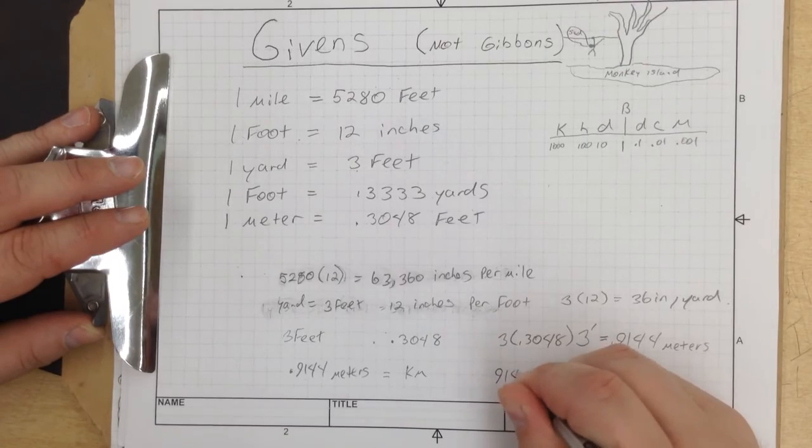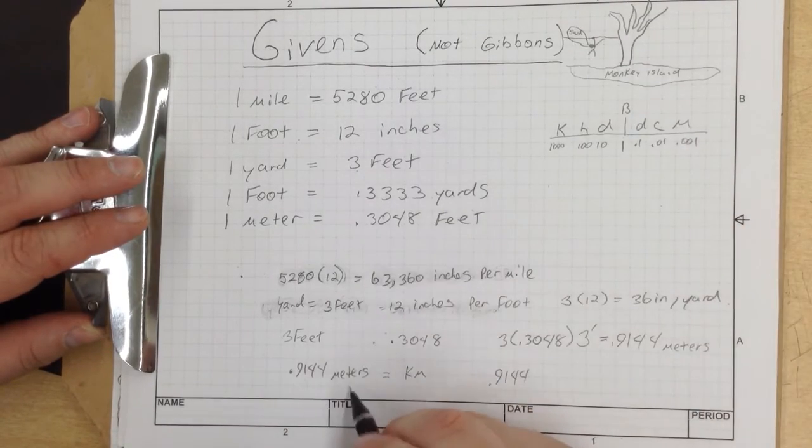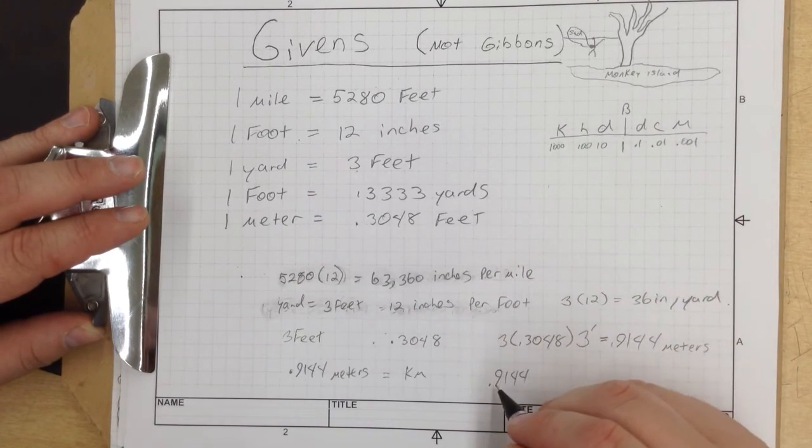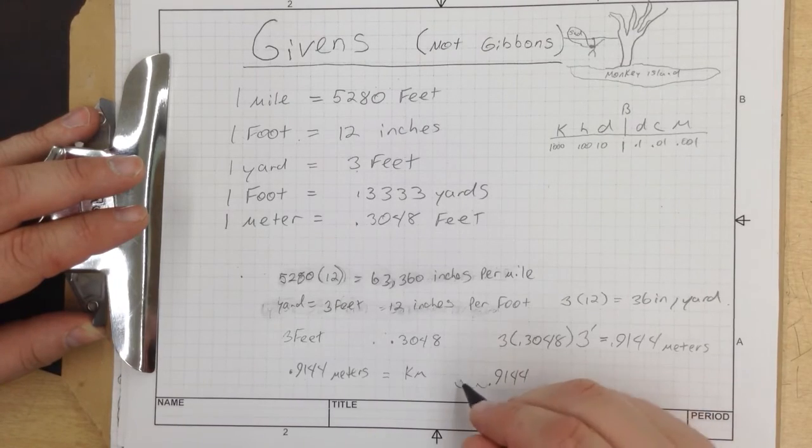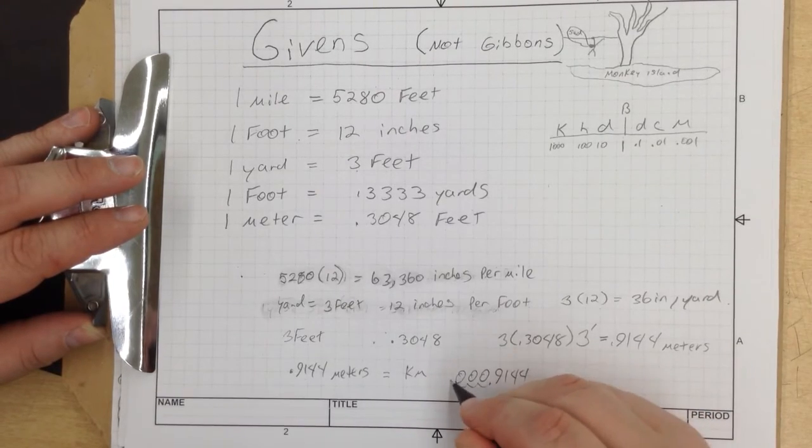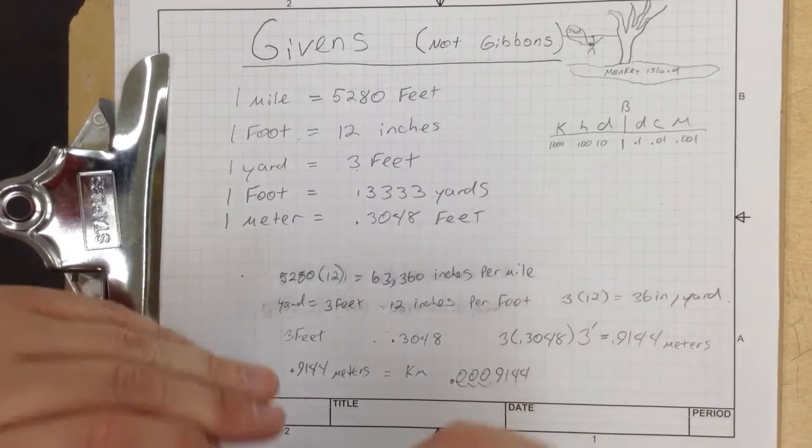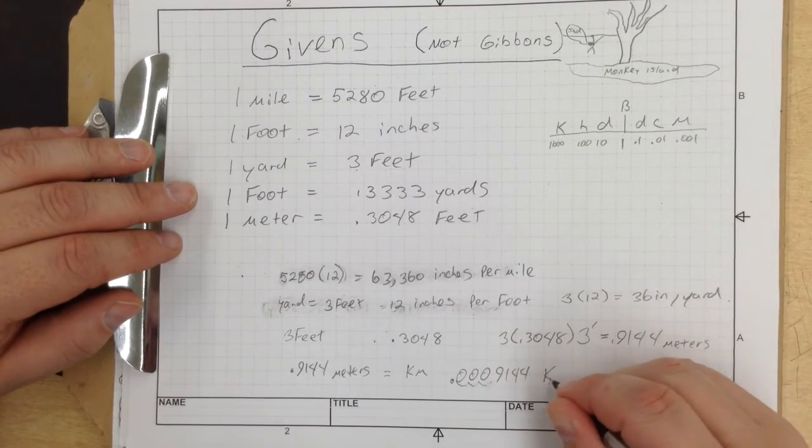We have 0.9144 meters, which is our base unit. We go 1, 2, 3 over to the left. So it is 1, 2, 3 - new number right there. We know that this is 0.0009144 kilometers.